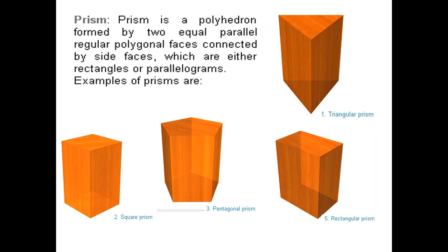Under polyhedrons, we have prisms. A prism has two regular polygons which are parallel to one another. For example, here you have a triangular polygon and one more triangular polygon — both are parallel and connected by rectangular faces. Depending upon the geometry of the polygon, it is named as triangular prism, square prism, pentagonal prism, or rectangular prism.